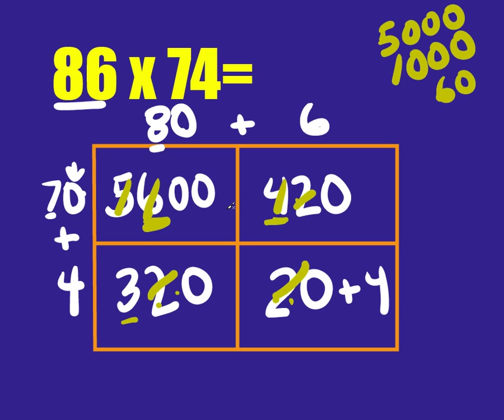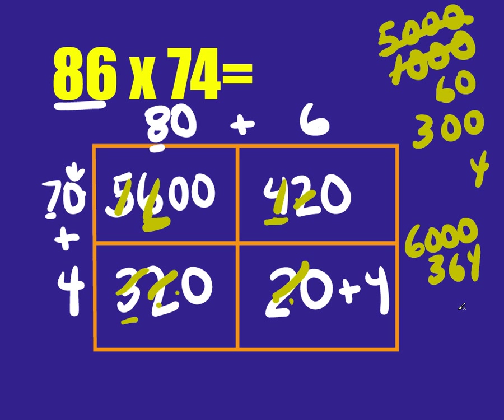Notice the order, I can do them in any order I want. You can have fun with your order. There's still 300 there. And then there's just 4. So let's look at this. We've got 6000. Look at the practice with place value. Again, this is all stuff I would do in my head. 6364.